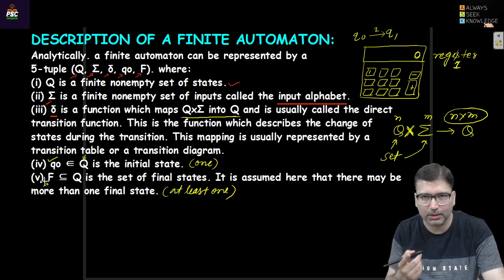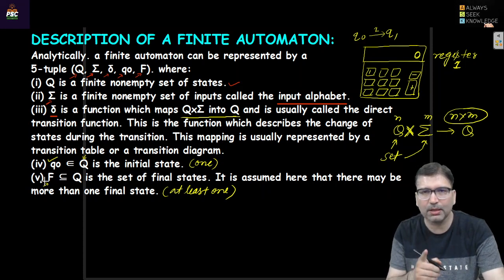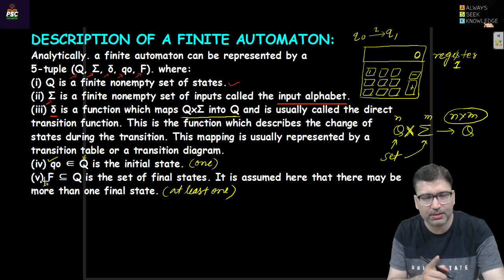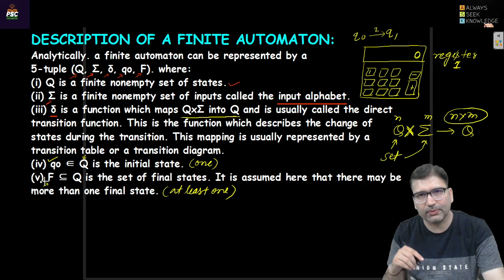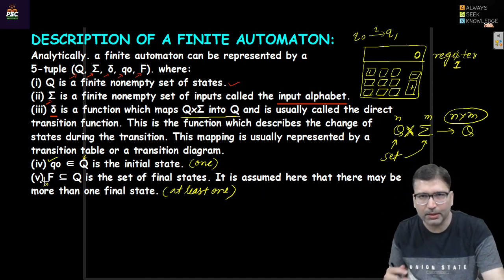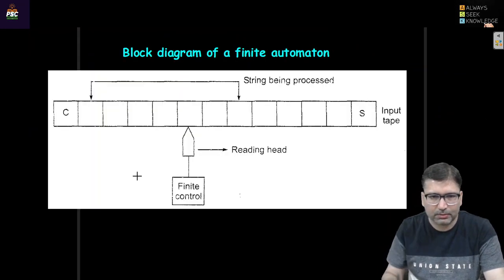If the automata is finite and deterministic, there must be only a single initial state. Please remember: the initial state must be single, and final states can be one or more.